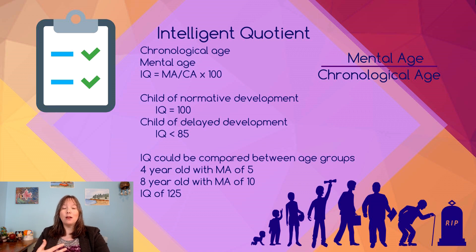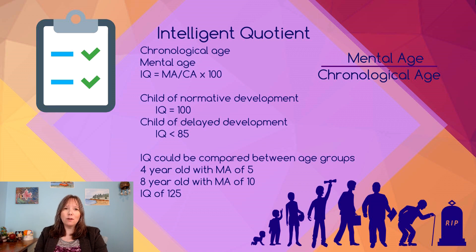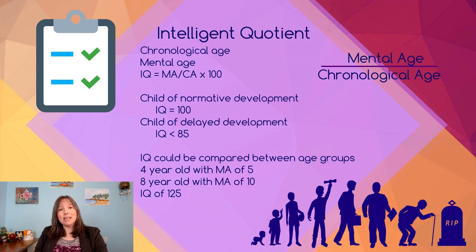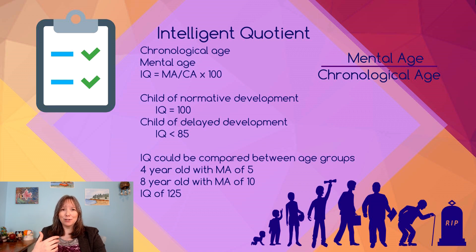Binet worked with kids and found cognitive tasks that the average five-year-old, six-year-old, and seven-year-old could do, and so on. Based on knowing what tasks an average kid of a given age could do, he could identify one's mental age. If a child could do the mental tasks commonly associated with a seven-year-old but couldn't do tasks associated with eight-year-olds, they were considered to have a mental age of seven. You take the mental age on top and the child's chronological age on the bottom. If mental and chronological age match, they end up with an IQ of 100 — so by default, an average IQ has a score of 100.